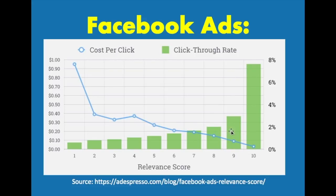I try to get around 7, 8, or 9 for Facebook relevancy score — 10 is pretty hard to do; you have to really optimize everything and do a lot of testing to get all the way up to 10. Really, 6 is the lowest I like to see. If I start seeing it lower, I try to test different ad images, different targeting, maybe try different landing pages or improve landing pages. The source here is adespresso.com — you can find more about relevant score and how it impacts your click-through rate.